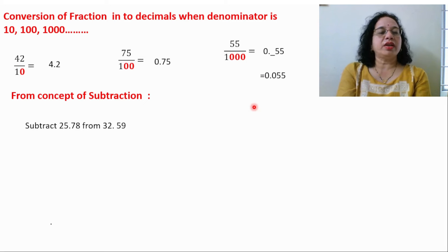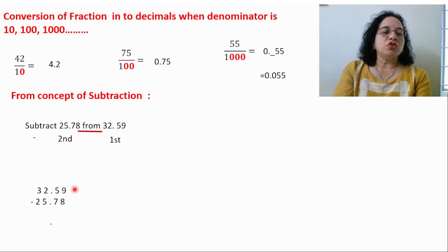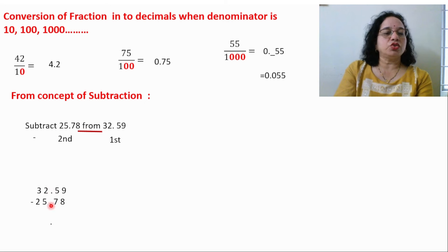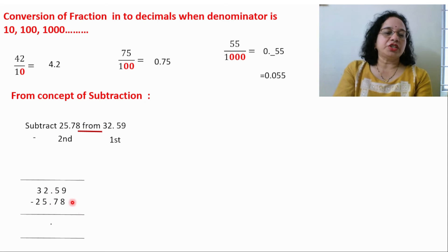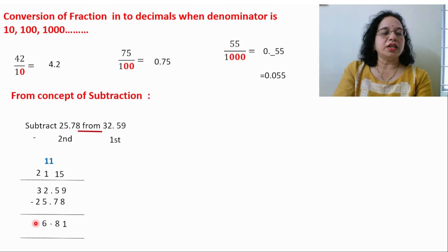Concept of subtraction: whenever 'subtract' and 'from' appear, underline the word 'from.' Write the number after 'from' first, then the second number, and put a minus sign. Arrange in vertical form, making sure the decimal comes below the decimal. Now subtract: 9 minus 8 gives 1. You cannot subtract 7 from 5, so borrow — the 5 becomes 15; 15 minus 7 is 8. Again borrow for the next place: 11 minus 1 is 6. And 2 minus 2 is 0.